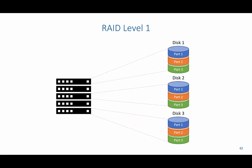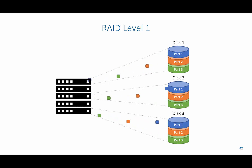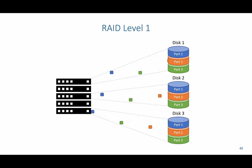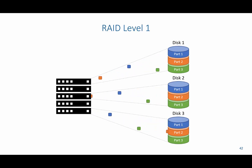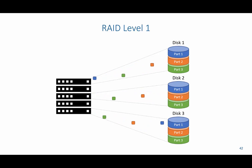RAID level 1 introduces the concept of mirroring, which means duplicating certain parts across multiple disks. As you can see, part 1 is duplicated across disks 1, 2, and 3 — same with parts 2 and 3. So if we lose disk 3, nothing will happen — we still have it duplicated across disks 1 and 2. We could even lose disk 2 and still have all the information on disk 1. However, this can be costly to duplicate everything across multiple disks.